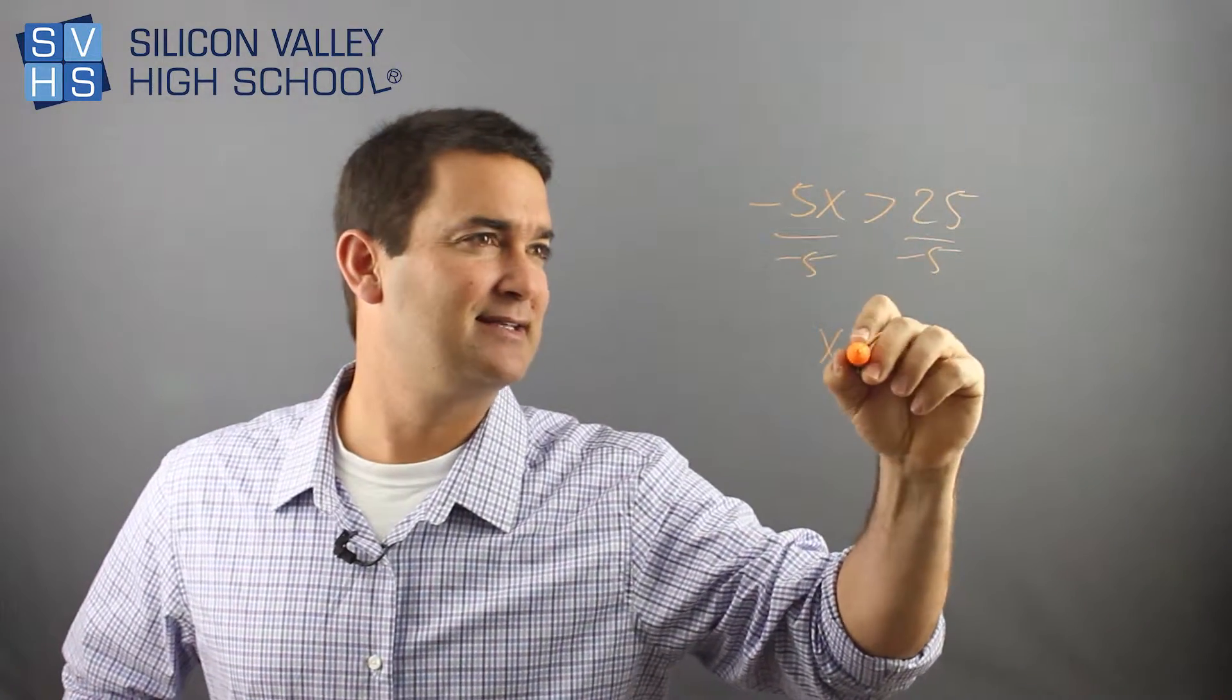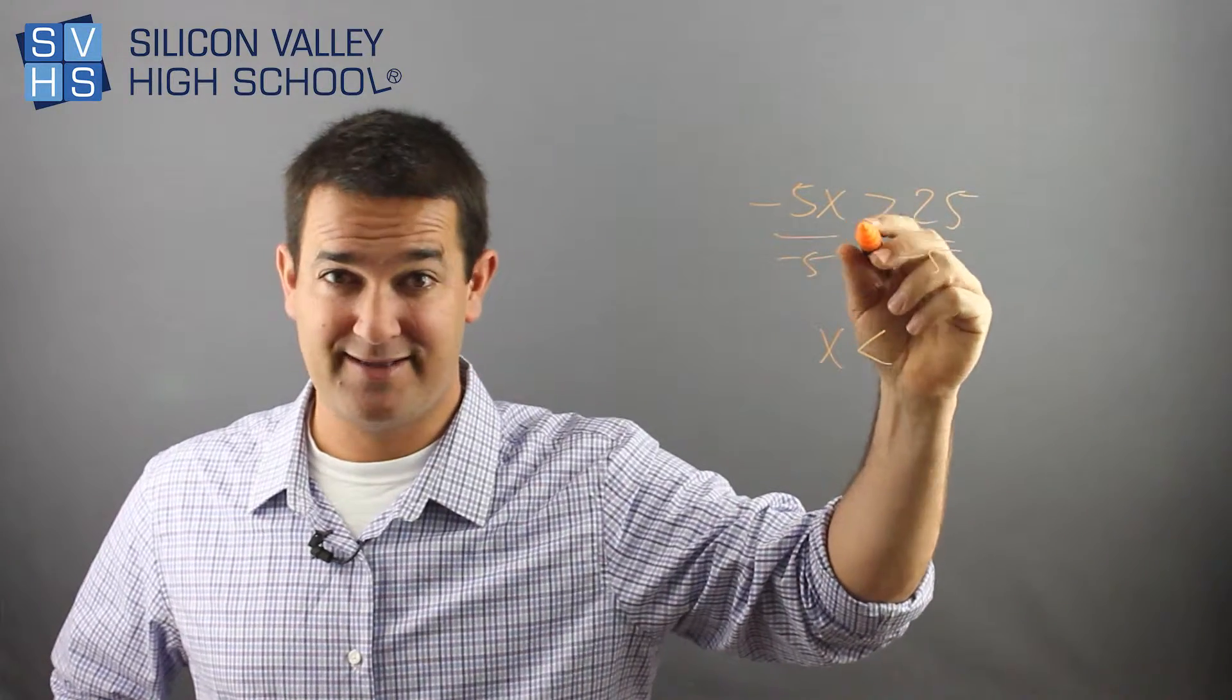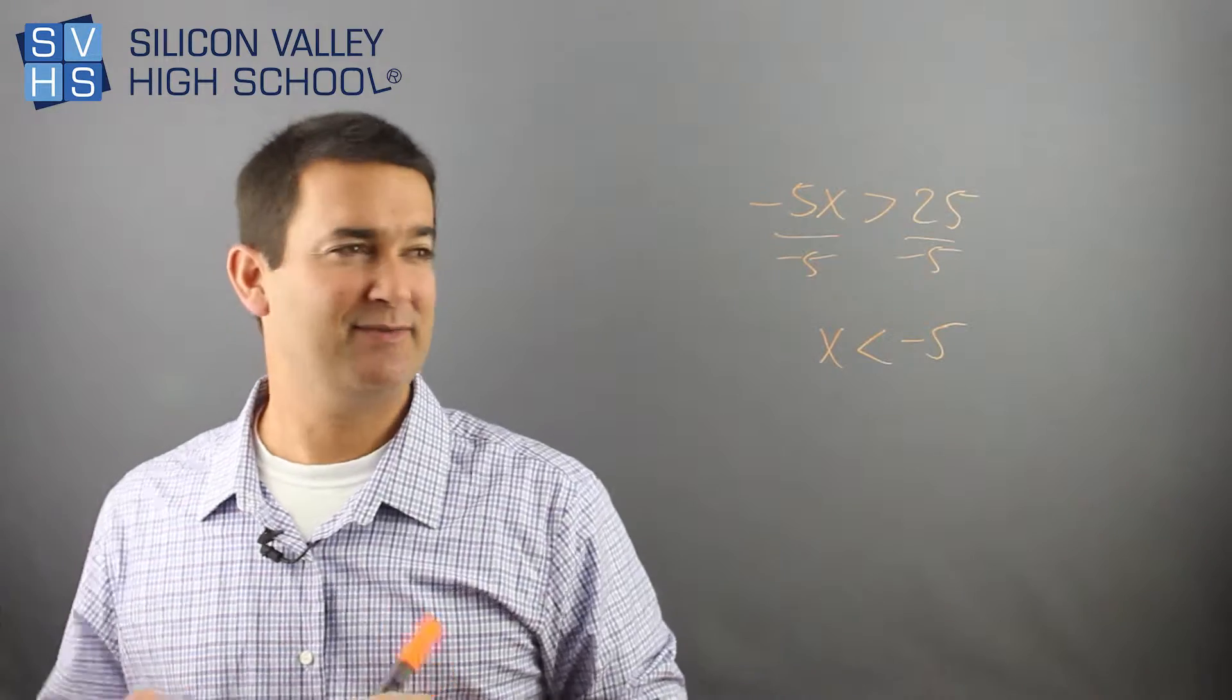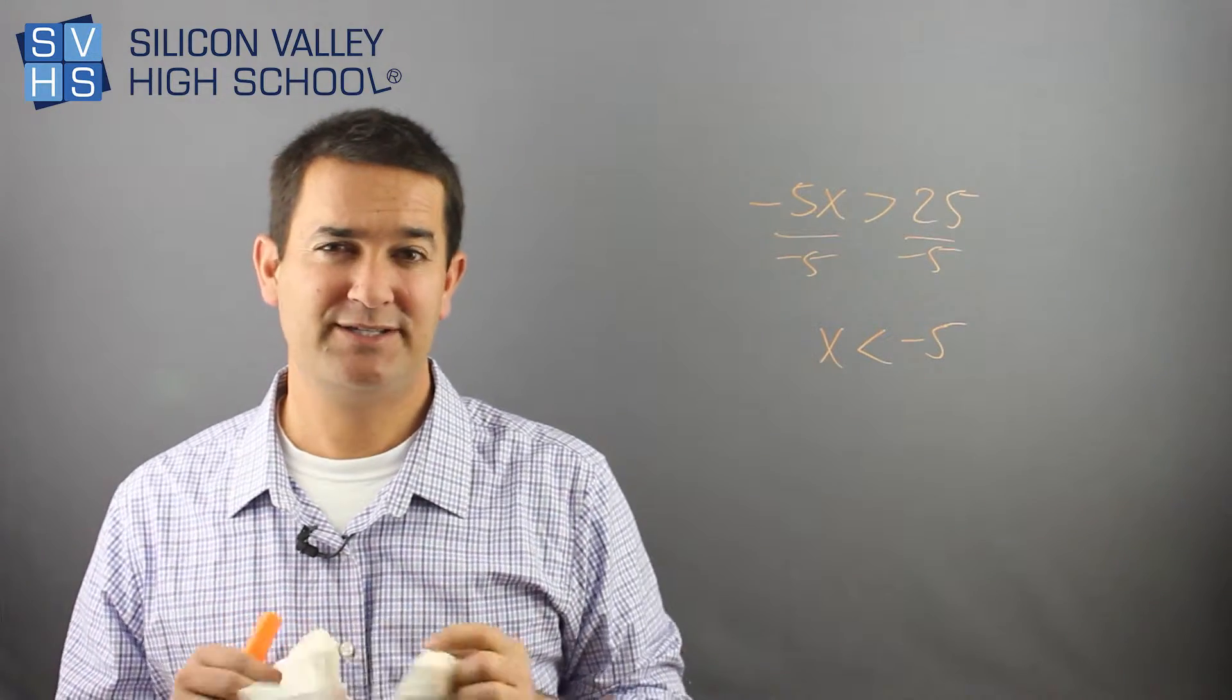And so you have x is less than—now it used to be greater than, now it's less than negative 5. That's the only difference. I mean, I don't care if it's two step equations, three step equations, if it's two step or three step inequalities, again, it's totally identical to a normal equal sign.